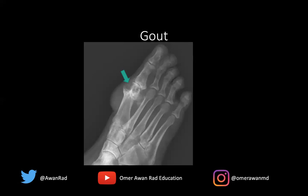The other finding that you can see is soft tissue swelling or soft tissue tophi, and there's a punctate calcification that you can see here. Sometimes the crystal deposits can happen in the soft tissues, and in this case it's along the soft tissue around the first metatarsal. So this is a calcified tophi in the setting of gout.